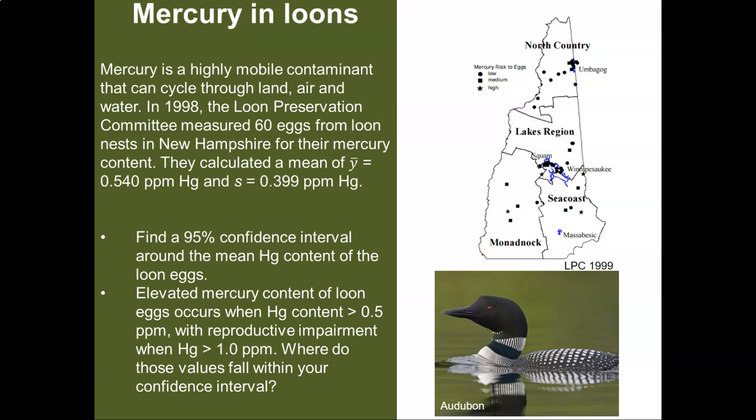And so there's some data from in 1998 the Loon Preservation Committee measured 60 loon eggs from nests in New Hampshire and they measured how much mercury is in those loon eggs. They calculated a mean y bar of 0.54 parts per million of mercury and a standard deviation of 0.399 parts per million of mercury.